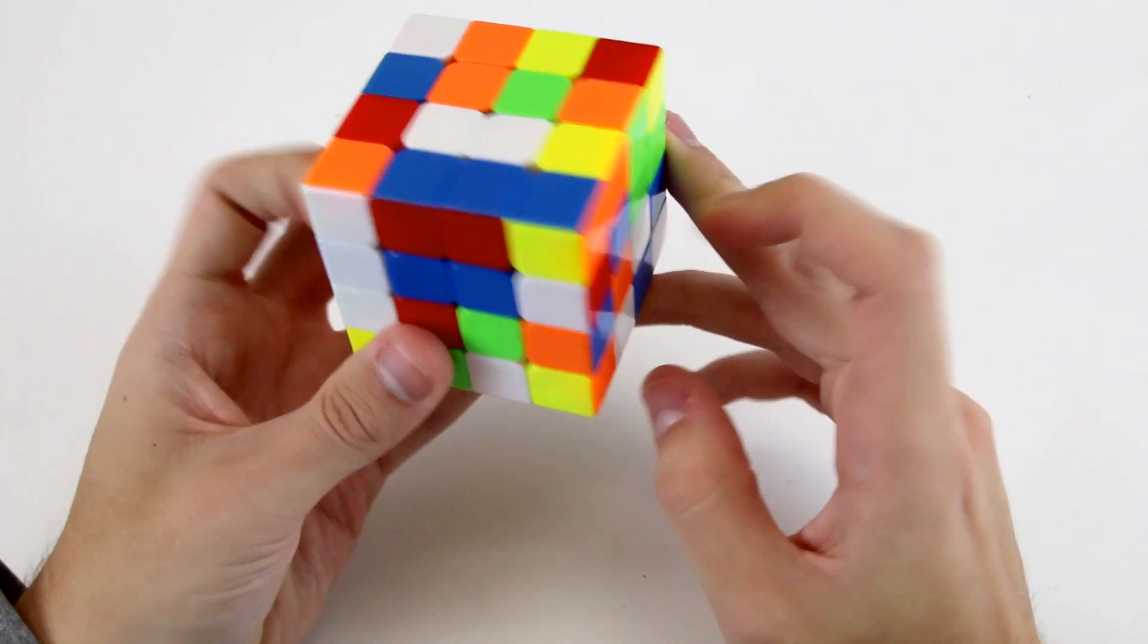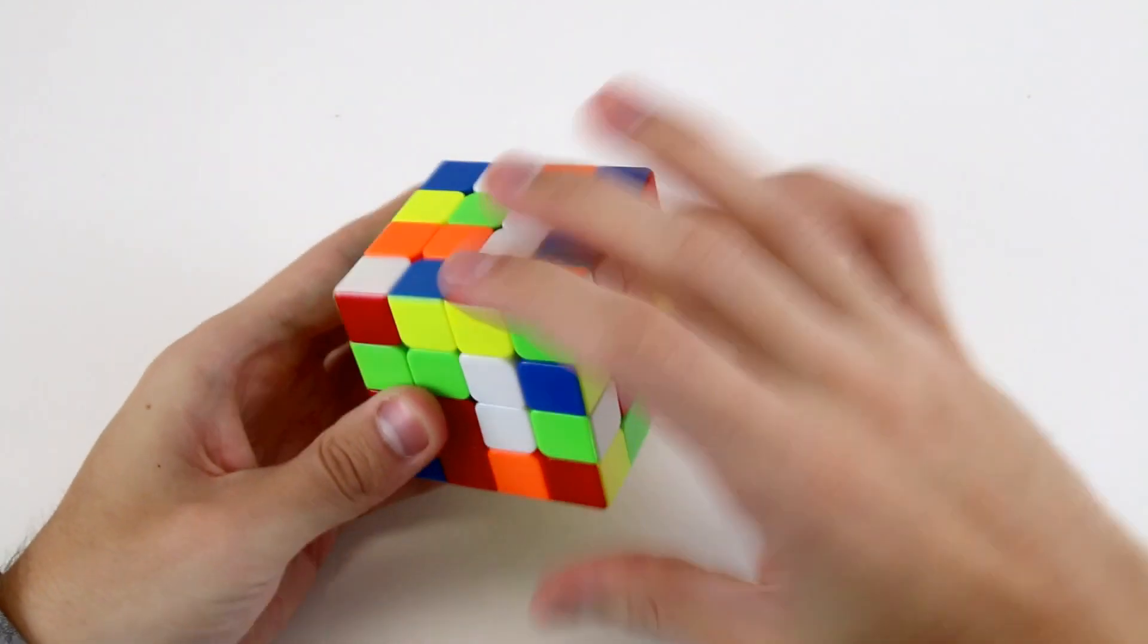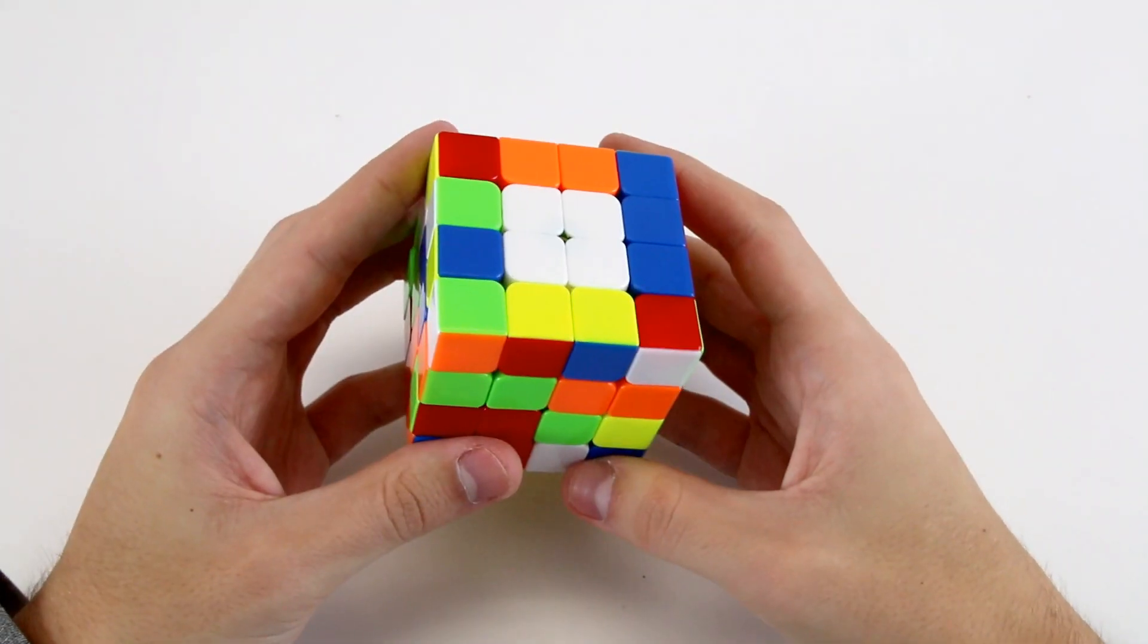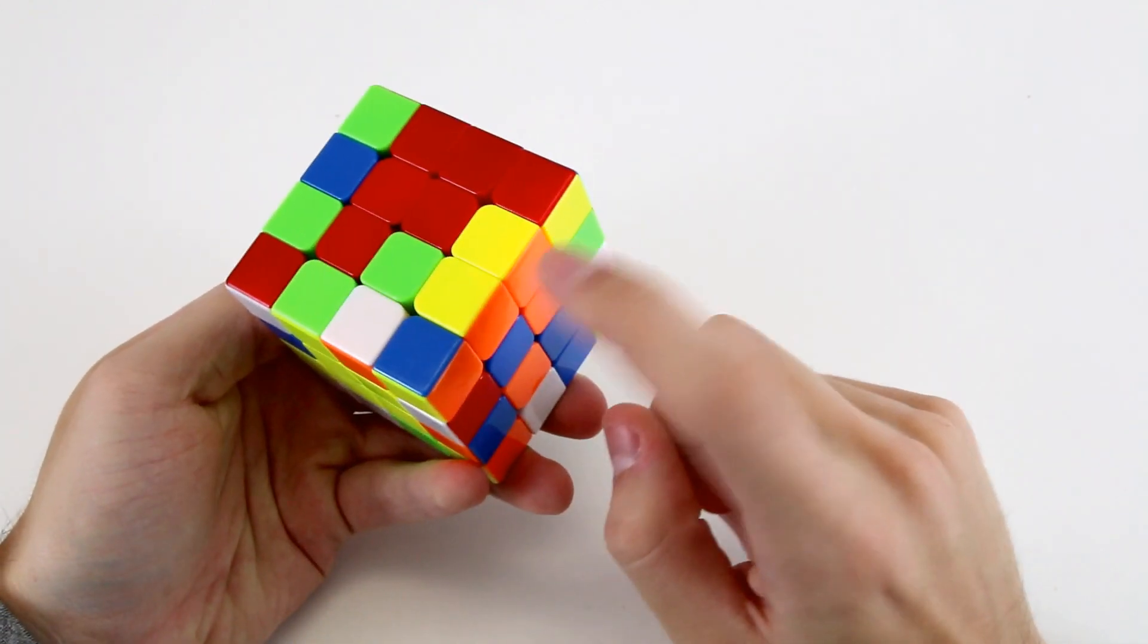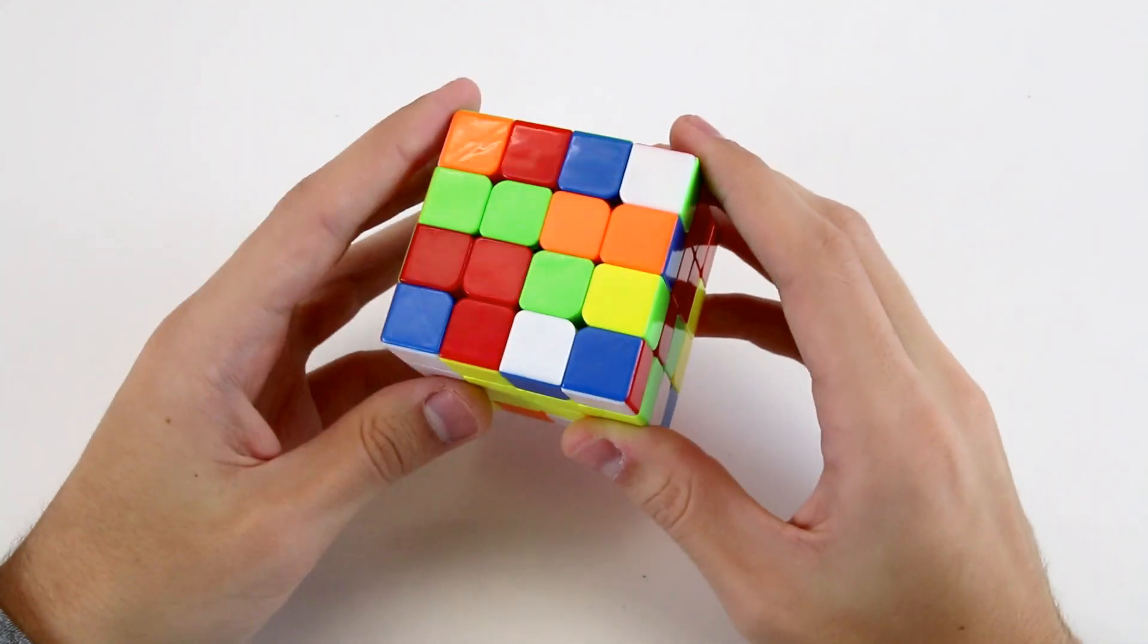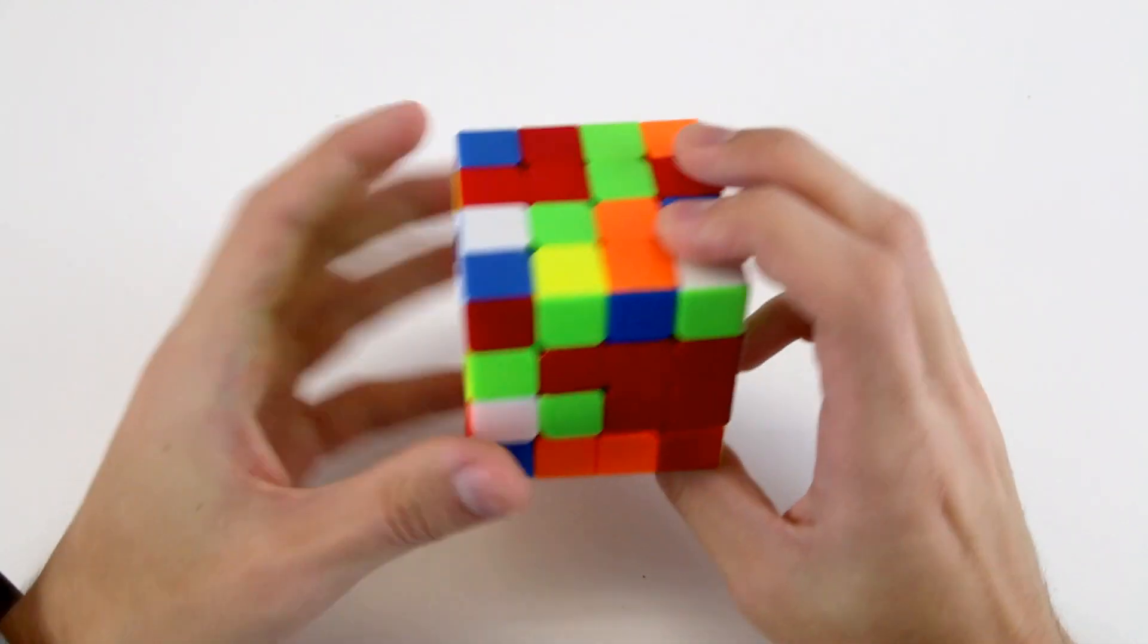Now I've got these two, which I can attach by doing R prime and then U2, and then insert it like so. And as I was doing that, well, a couple of things popped up. I've got this yellow and orange solved edge, so I can immediately go ahead and use that and insert it into the yellow layer like so.